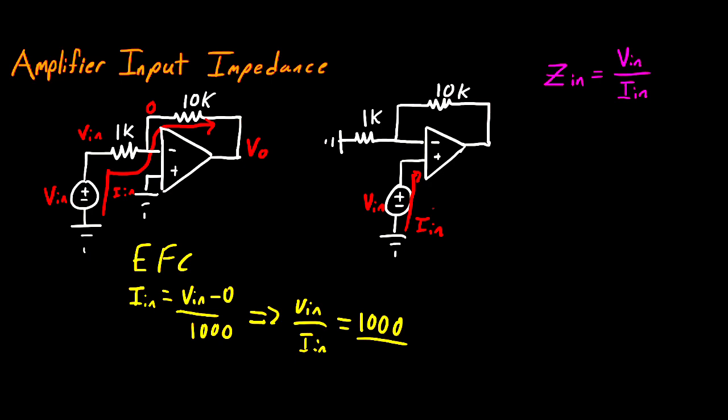Since we know that no current can go into this amplifier, I in has to be equal to zero for an ideal op-amp. So that means that Z in is going to be V in divided by zero. So at this point, from a mathematical standpoint, you might be thinking, this is undefined.